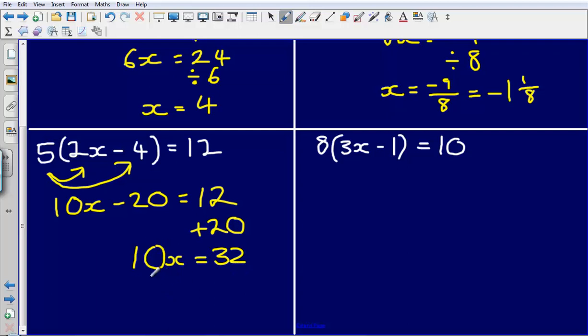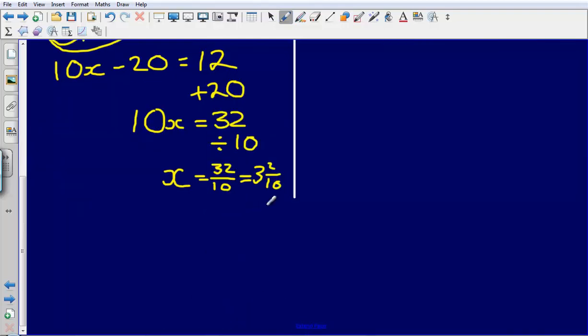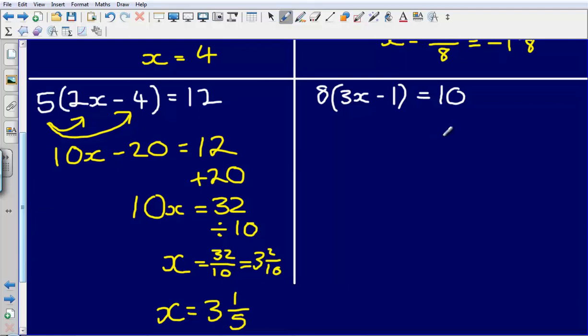Then to undo this multiply by 10 I'm going to divide by 10, and so my final answer is going to be 32 over 10, which I could then say is exactly the same as 3 and 2 tenths, which is the same as 3 and 1 fifth. So my final answer there would be x is equal to 3 and 1 fifth.